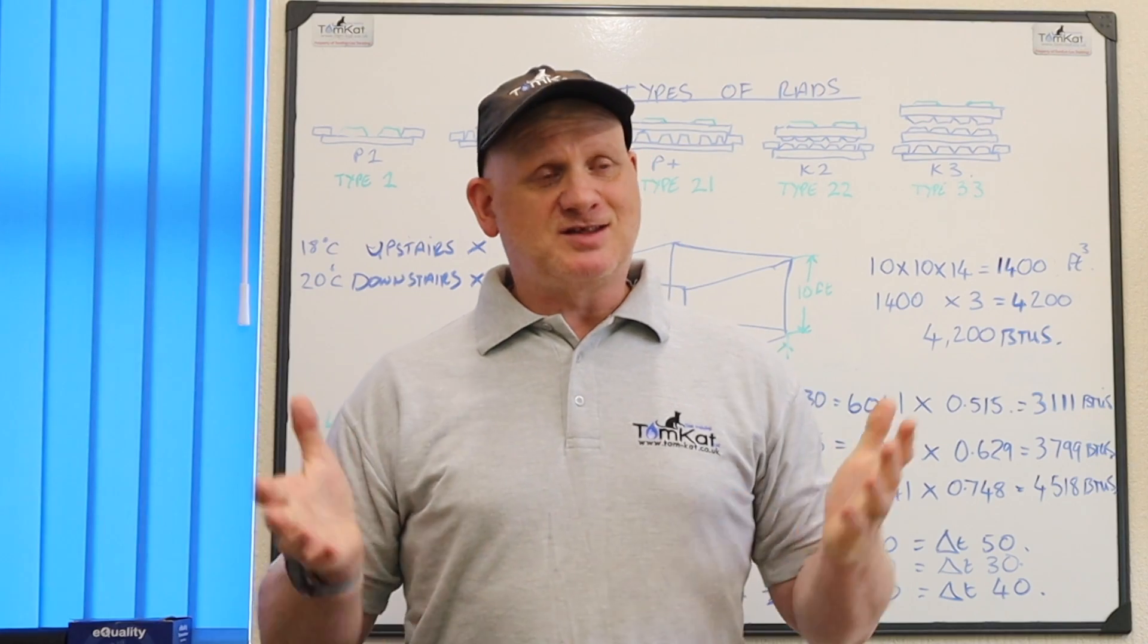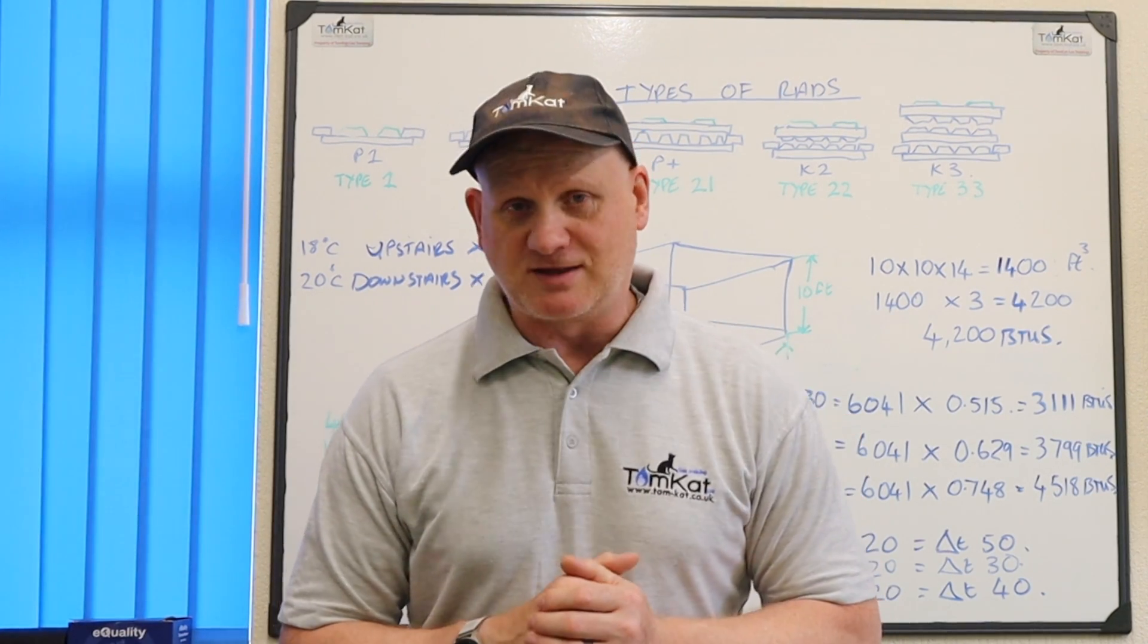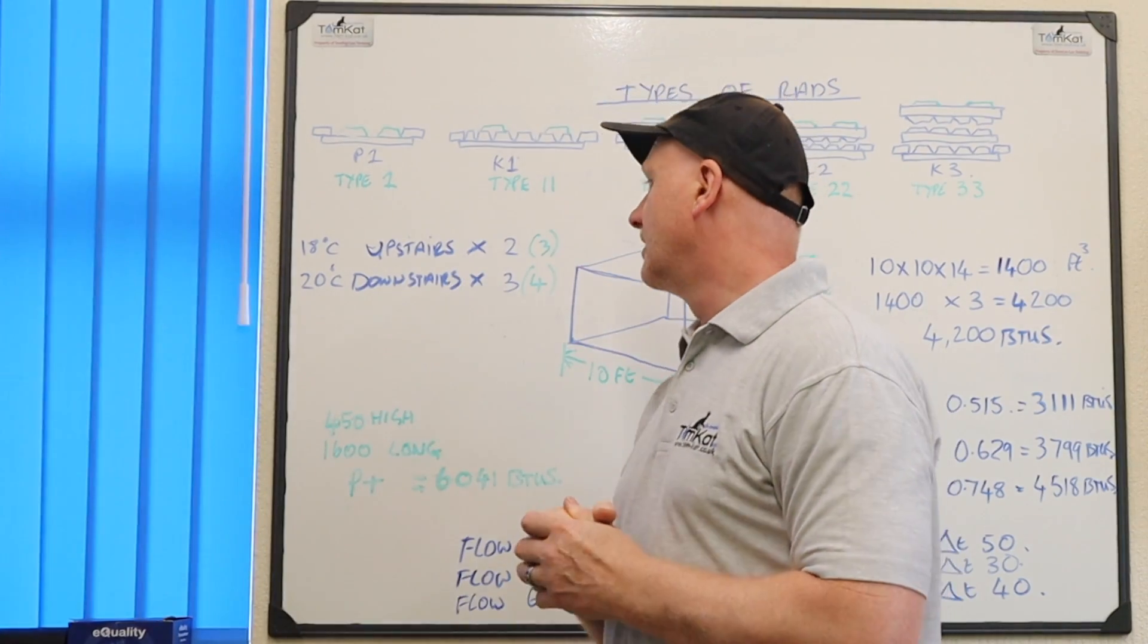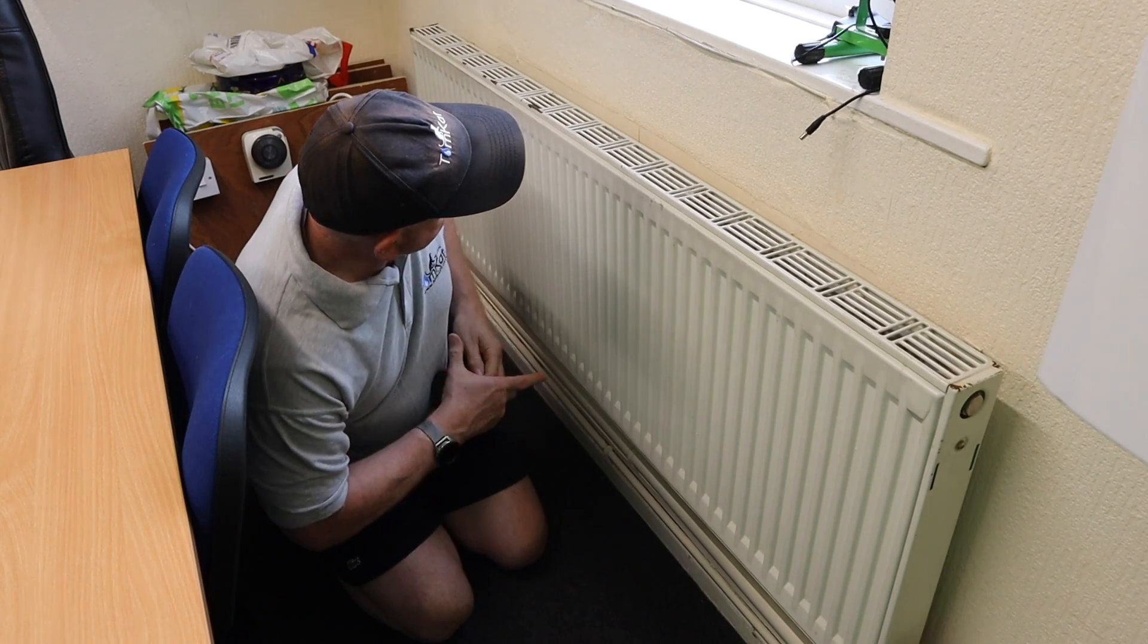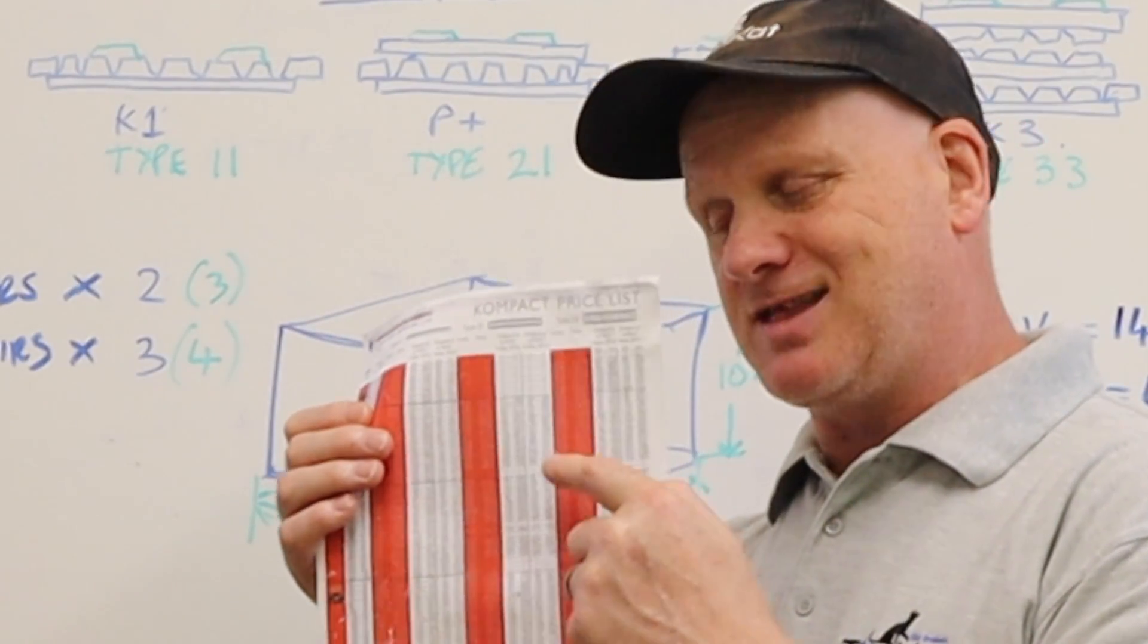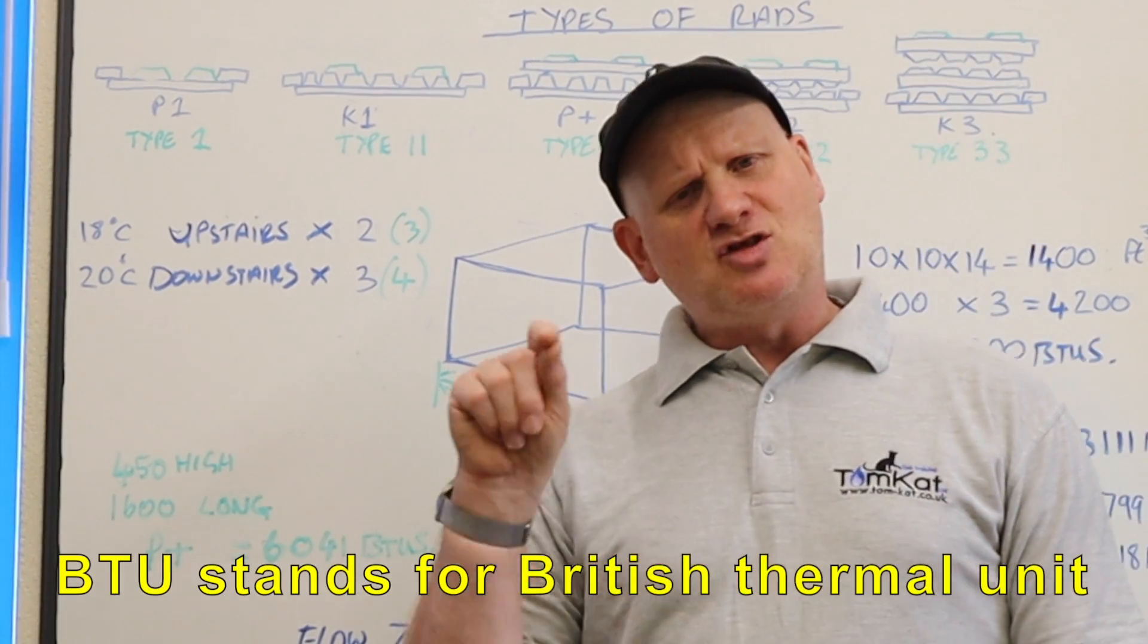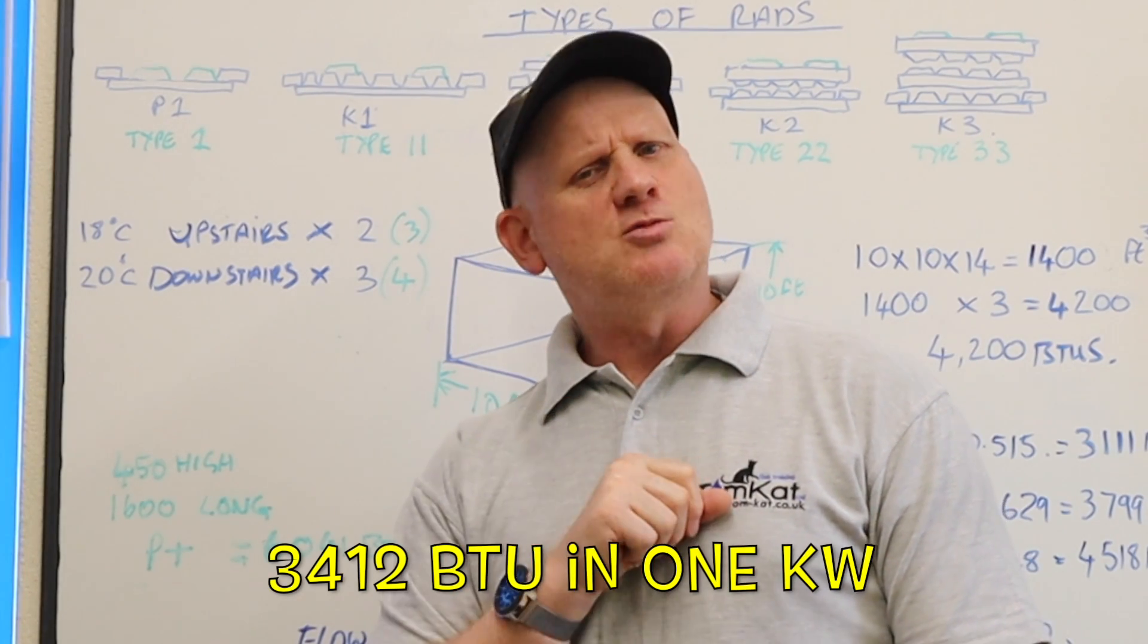Now let's actually have a look at sizing the radiators and checking to see whether they are good enough for a 55 degree flow temperature. The room we're going to be using is this classroom here at Tomcat. First thing is I have sized the radiator. The radiator here is 450mm high, it is 1600 long, and it is a P plus radiator. It gives us 6041 BTUs. BTUs meaning British Thermal Units. And if you want to know how many kilowatts there are in a BTU, there are 3412 BTUs in a kilowatt.